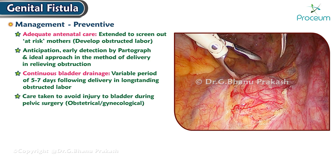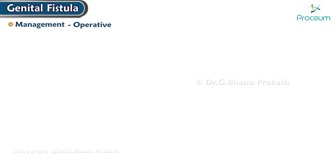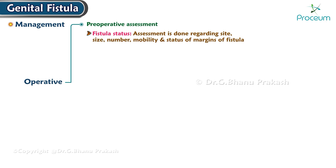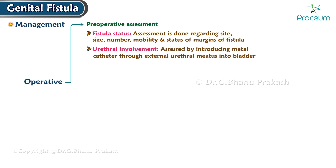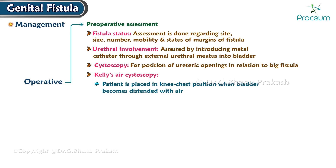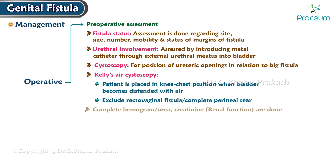Operative management: Local repair of the fistula is the surgery of choice. Pre-operative assessment includes evaluation of the site, size, number, mobility, and status of the margins of the fistula. Urethral involvement is assessed by introducing a metal catheter through the external urethral meatus into the bladder to ascertain the position of the ureteric openings in relation to a large fistula. Cystoscopy is indicated. Kelly's air cystoscopy is performed with the patient in knee-chest position when the bladder is distended with air, to exclude associated rectovaginal fistula or complete perineal tear. Complete hemogram and urea/creatinine renal function estimation are done.